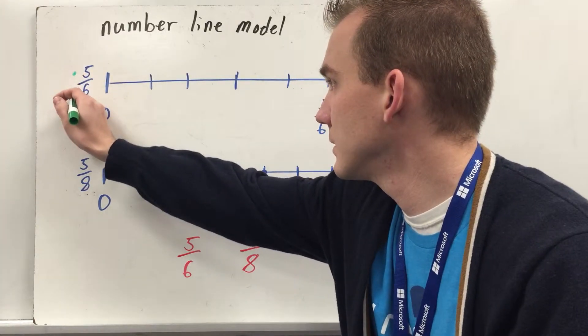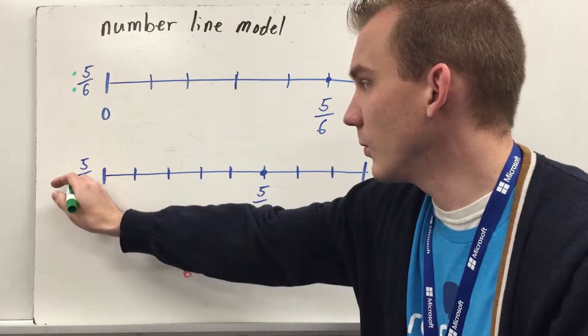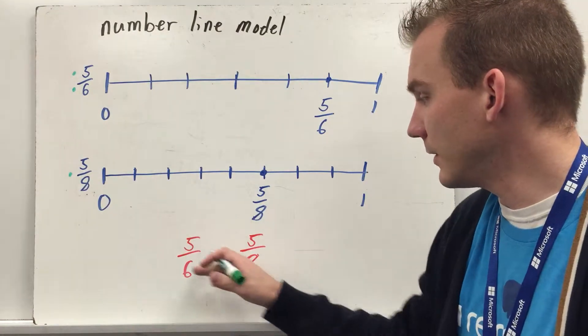That means that five-sixths is going to be the larger of the two fractions, so that will get two dots, and five-eighths will only get one dot.